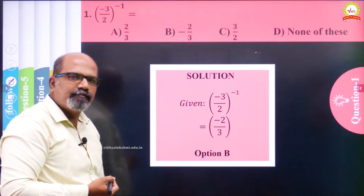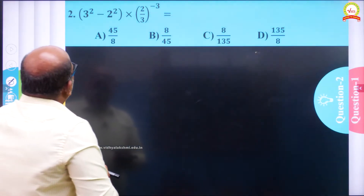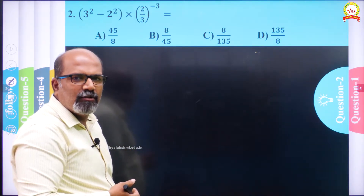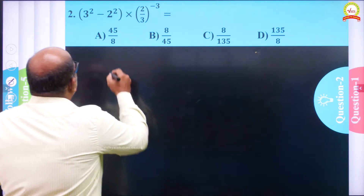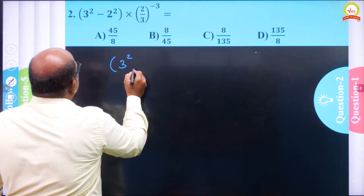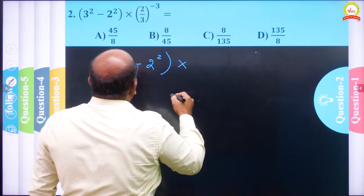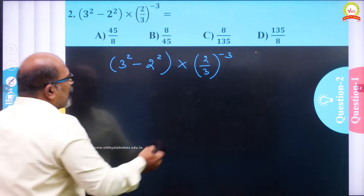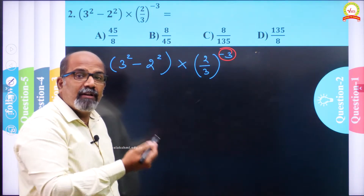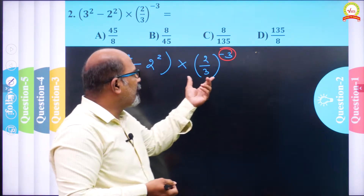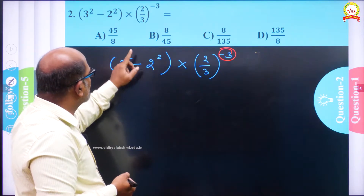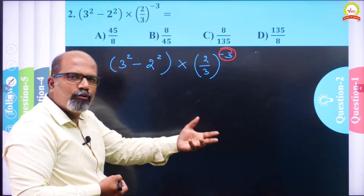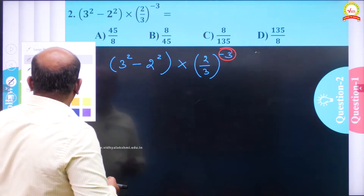Yes, -2/3 is the correct answer and it is option B. Now let us move to the second question. It is a little big expression but it is also going to be a simple question. The question is: 3 raised to 2 minus 2 raised to 2, the whole multiplied by (2/3) the whole power minus 3. I notice immediately that we have a negative exponent of minus 3 here.